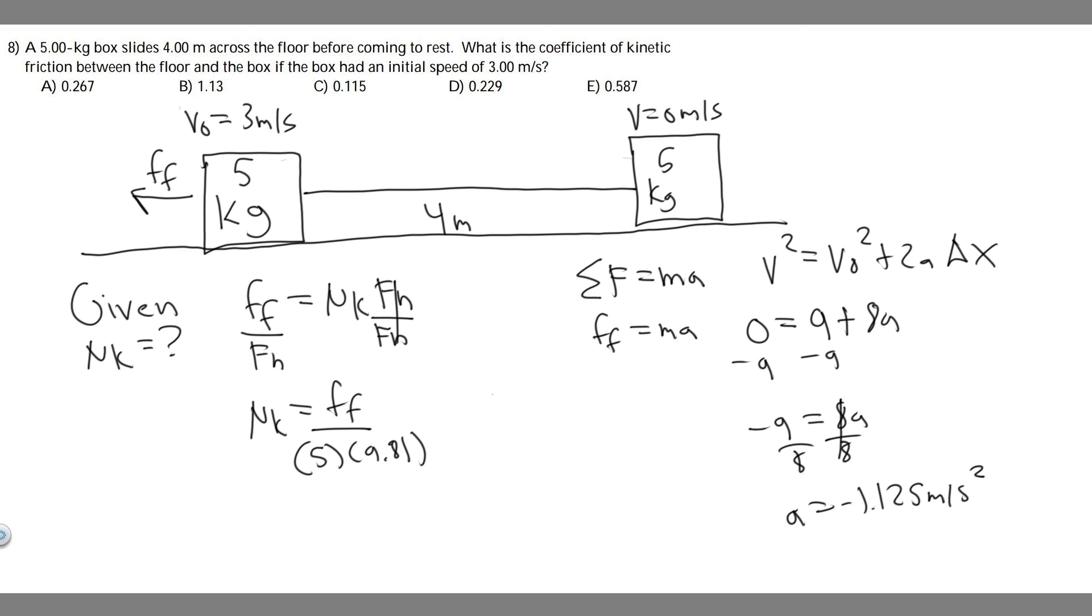You're going to plug in f sub f equals the mass, 5, times the acceleration we just solved for. I'm just going to plug in the magnitude, 1.125. Do 5 times 1.125, and you'll find the force of friction equals 5.625. Keep in mind, this is Newtons because it's force.